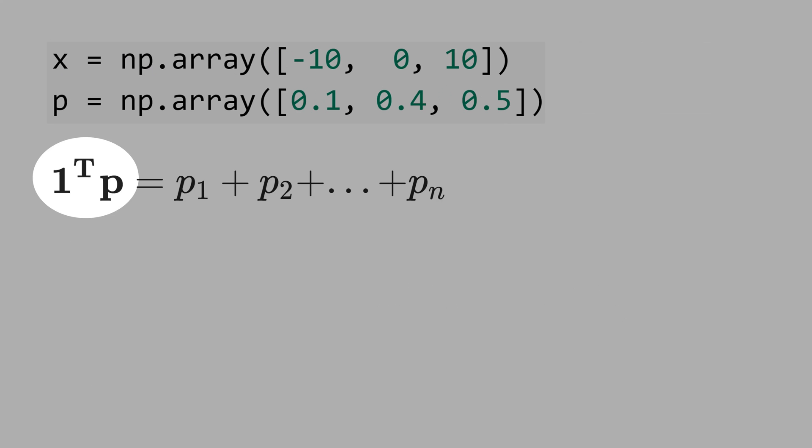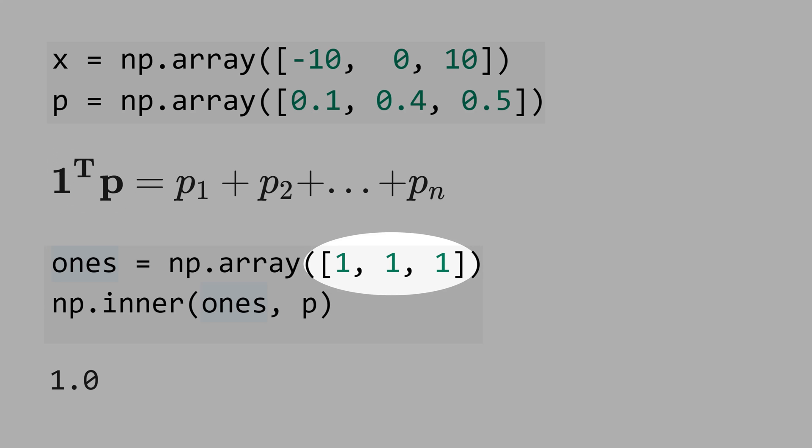Now, let's multiply 1 times p, but note that 1 here is not a scalar. 1 is a vector, 1 is this vector here, 1, 1, and 1, that means dimension 3. This notation here is just sum up all the p's, that will be equal 1.